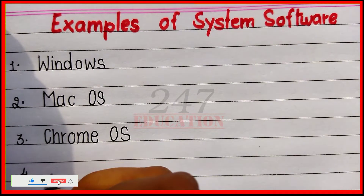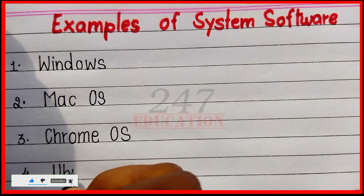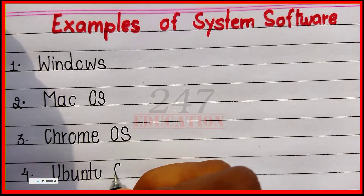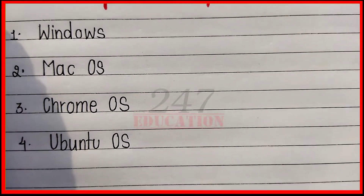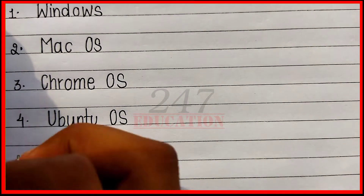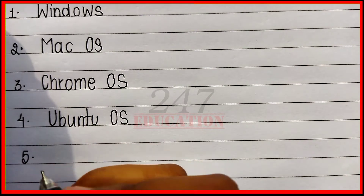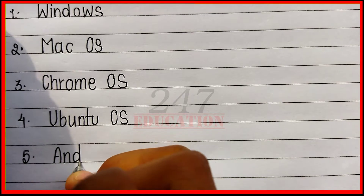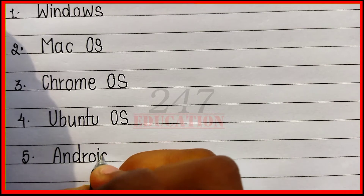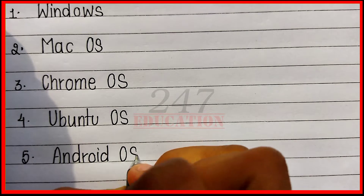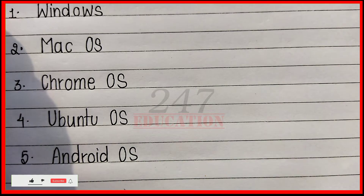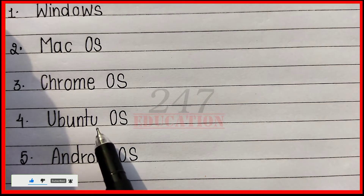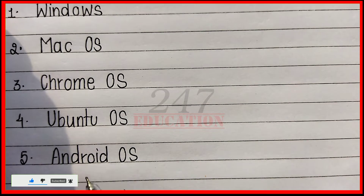Fourth: Ubuntu OS. Fifth: Android OS. To recap — first Windows, second Mac OS, third Chrome OS, fourth Ubuntu OS, fifth Android OS.